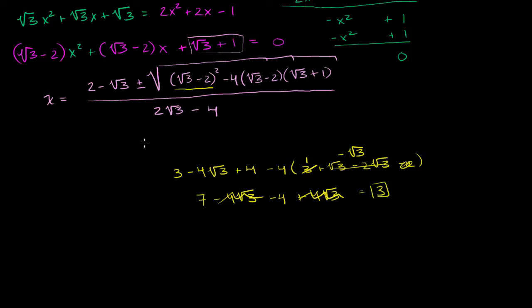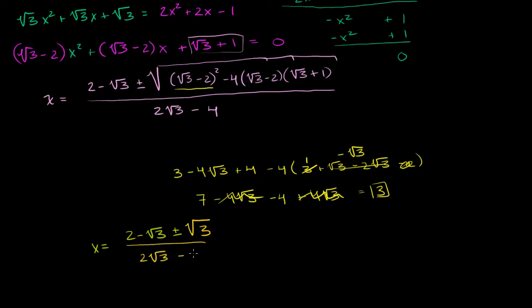So the whole thing under the radical sign is the square root of 3. Then this becomes our potential values for x: x equals 2 minus square root of 3, plus or minus the square root of this thing, which simplified to the square root of 3, times the square root of 3, all over 2 square roots of 3 minus 4.